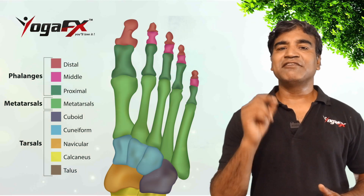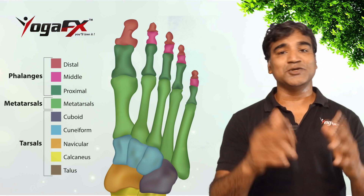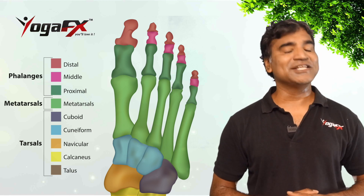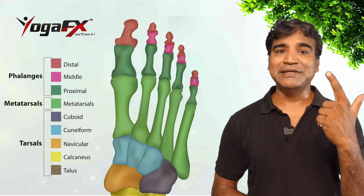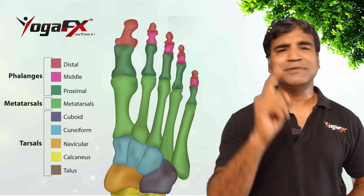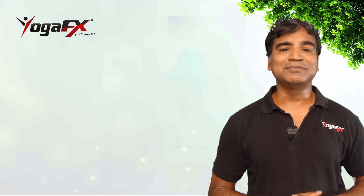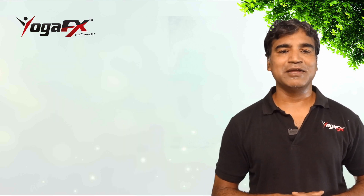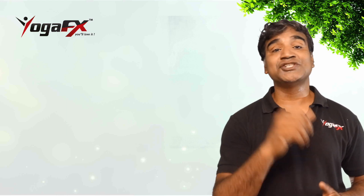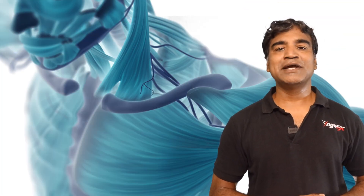The phalanges of the foot are 14 bones that comprise the toes. Each toe has three phalanges — proximal, intermediate, and distal — except the big toe, which has only two. With that, we complete the skeletal system. We really hope that you enjoyed it. Please feel free to send any questions. Stay tuned for the next lecture on the muscular system. Take care, keep smiling — namaste.